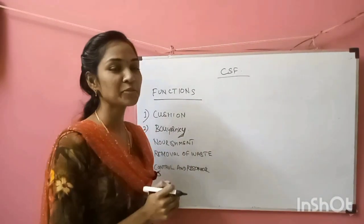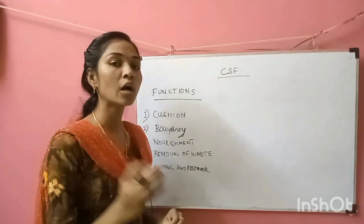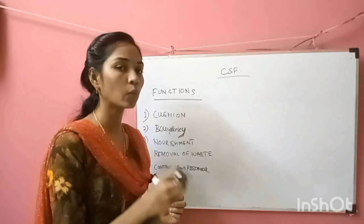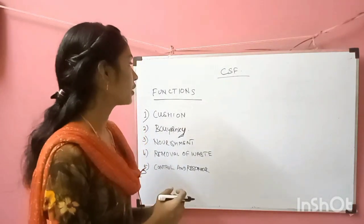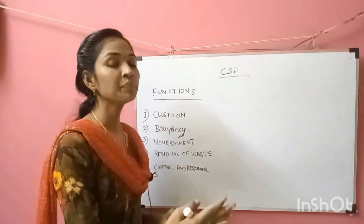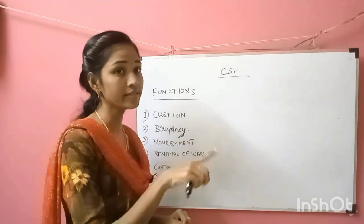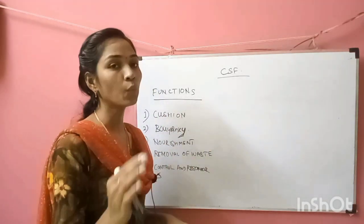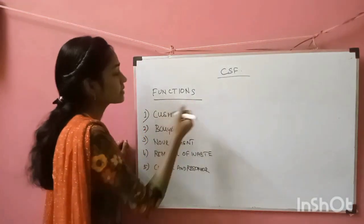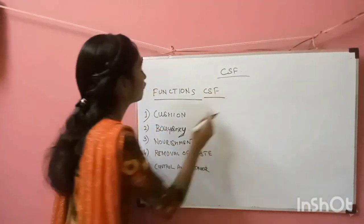Good morning everyone. Today we are going to discuss a very important topic. We already saw how the CSF is produced, how it circulates in the central nervous system and how it drains. Today we are going to discuss the functions of the CSF, then lumbar puncture — what structures we have to pass through and what are the contraindications for lumbar puncture.